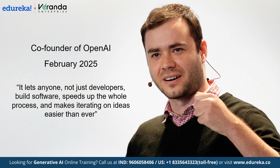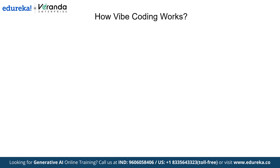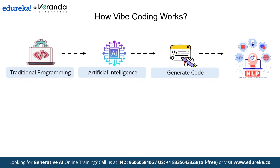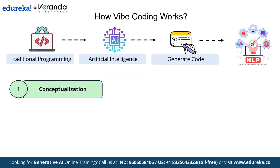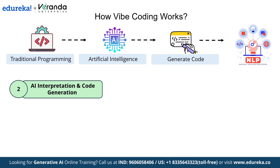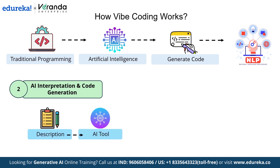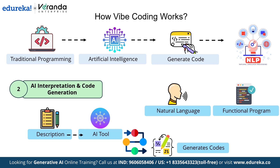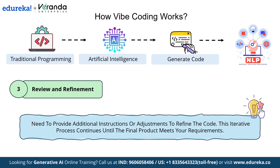Now that we've introduced Vibe Coding, let's dive into how this innovative approach actually works. Vibe Coding transforms the traditional programming process by leveraging artificial intelligence to generate code based on natural language descriptions. Here's the breakdown of the workflow. The first step is conceptualization: begin by clearly defining the functionality or application you want to create, articulating your ideas in natural language and detailing the design, features, and behaviors. The next step is AI interpretation and code generation: input your description into the AI-powered coding tool, which processes your input and generates the corresponding code, translating natural language instructions into a functional program. The last step is review and refinement: examine the AI-generated code to ensure it aligns with your expectations. You may need to provide additional instructions or adjustments, and this iterative process continues until the final product meets your requirements.